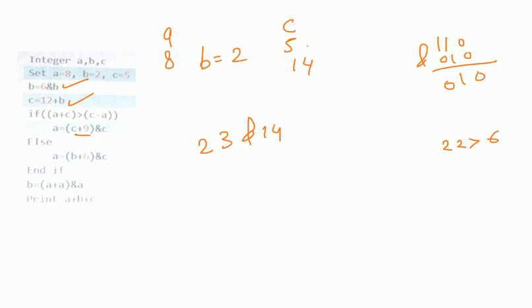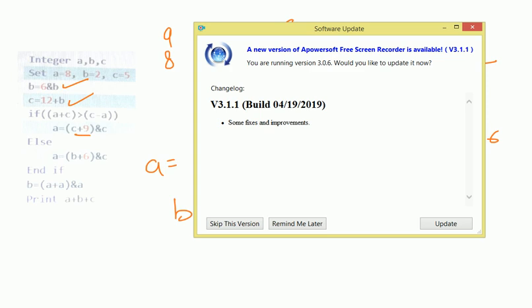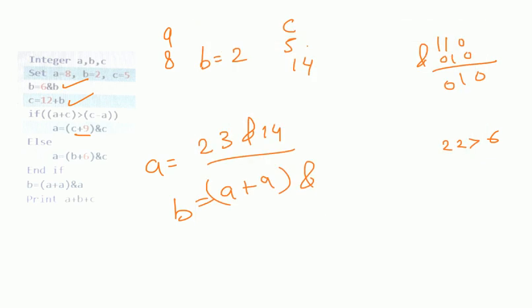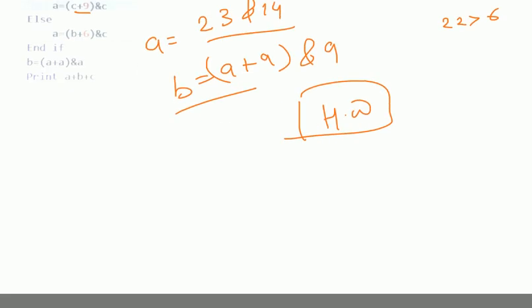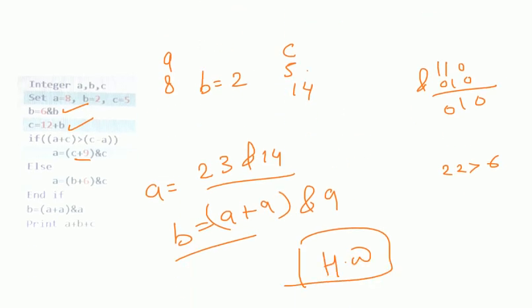You can perform the AND operation and find the value of a and b. This part is left as homework — you can convert to binary and compute the AND, or use any approach. Let's move to the next question.